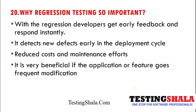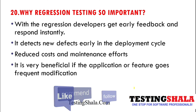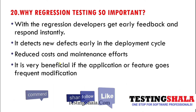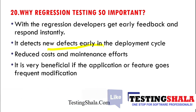Regression testing is important because developers get early feedback and can respond faster. As they change the code, running regression testing — whether manually or in an automated way — can catch issues with the application very easily. It also detects new defects early in the development life cycle, which reduces the cost of maintenance and fixing issues.